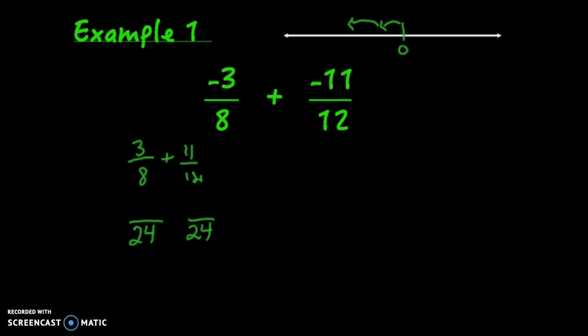If you need a review of converting, 3/8 equals how many 24ths? Scale it up: 8 times 3 equals 24, so 3 times 3 equals 9. Thus 3/8 equals 9/24. Do the same with 11/12: when making that into 24ths,